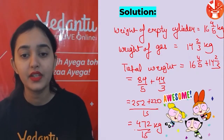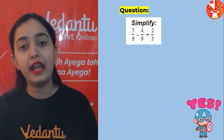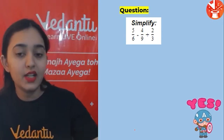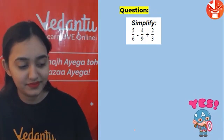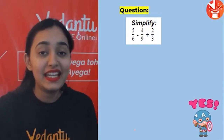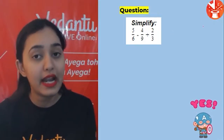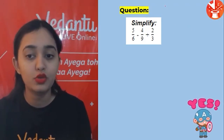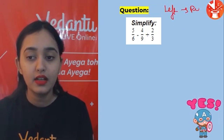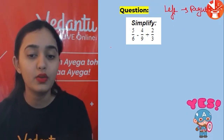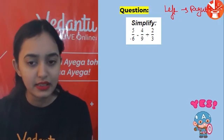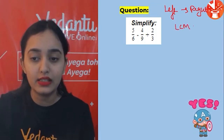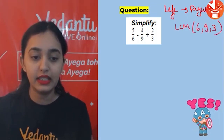Next: simplify 5/6 − 4/9 + 2/3. It has both subtraction and addition. BODMAS mein subtraction aur addition ka same priority hota hai, so we go left to right. LCM of 6, 9, and 3 is 18. Converting: 5/6 = 15/18, 4/9 = 8/18, 2/3 = 12/18.